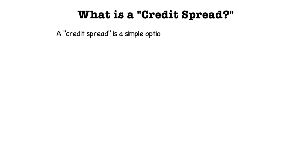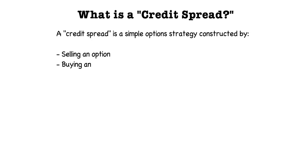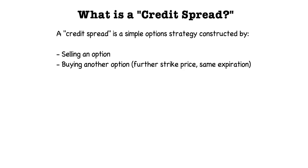So what exactly is a credit spread? A credit spread is a simple option strategy constructed by selling an option and buying another option at a further strike price in the same expiration cycle. The option you sell is going to be more expensive than the option you buy, which leads to a net credit when entering the position, and that is exactly why it's called a credit spread.